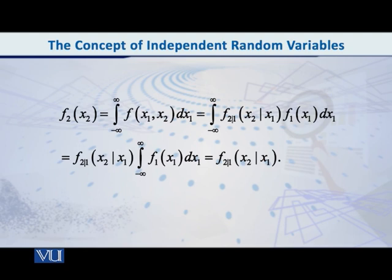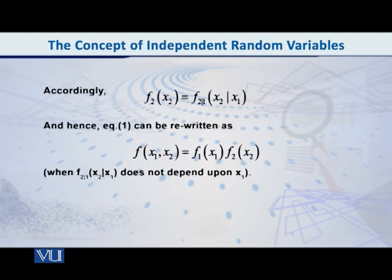So what do we have now? All we have now got is f(x2 given x1). And what was the equation on the left-hand side? f2(x2). So therefore, our equation now is this, that f2(x2) is equal to f(x2 given x1). In other words, the unconditional PDF is the same as the conditional PDF.